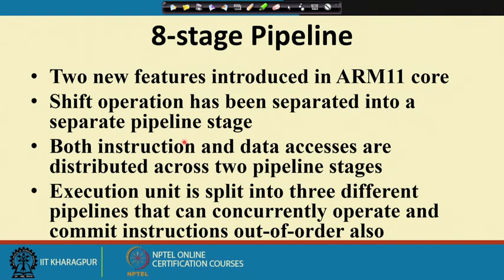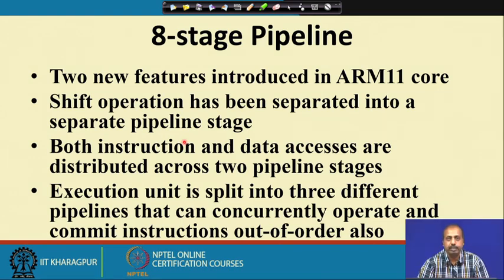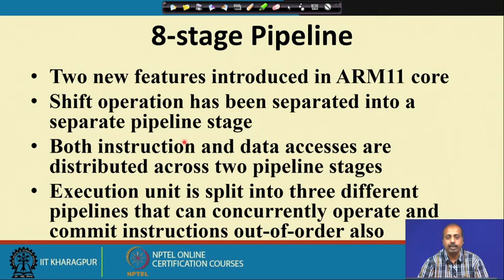There are 2 new features introduced. The first one is the shift operation — it has been separated into a separate pipeline stage. You remember that in the ARM architecture, before the ALU there is a barrel shifter. We can always do the shift operation in a separate pipeline stage, and that has been exploited in the ARM11 architecture, making it an 8-stage pipeline where the shift operation constitutes one stage.